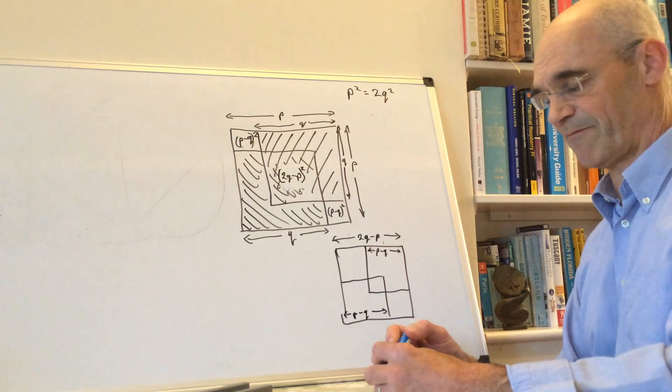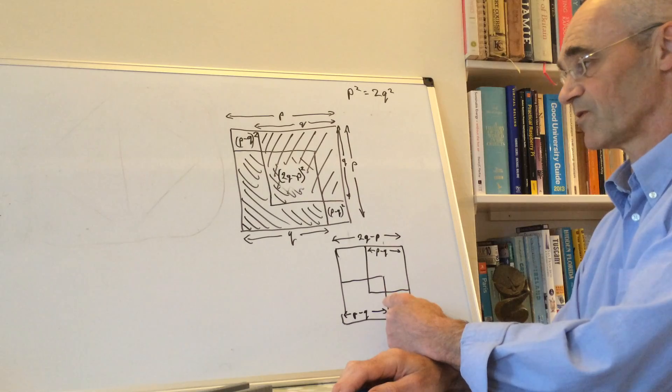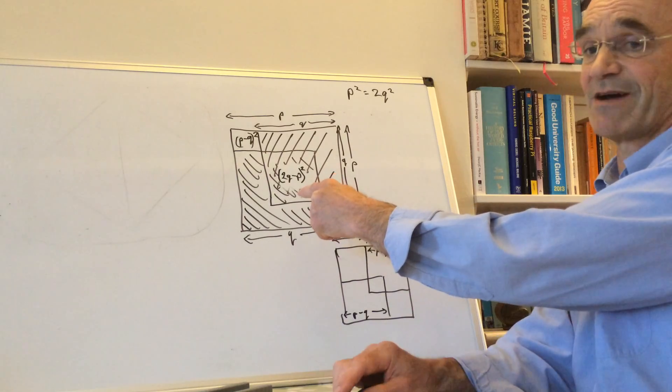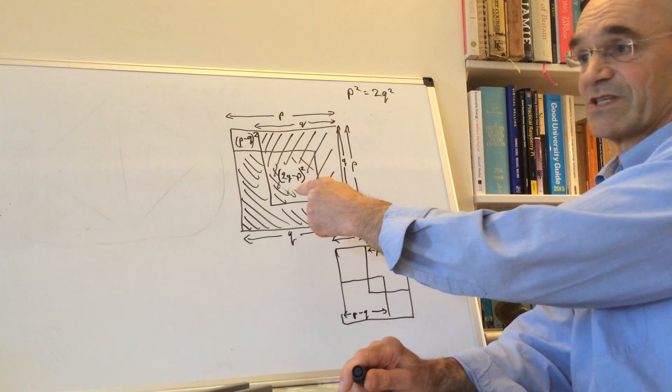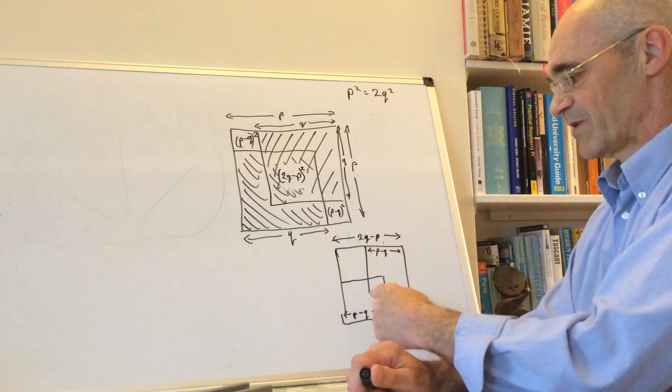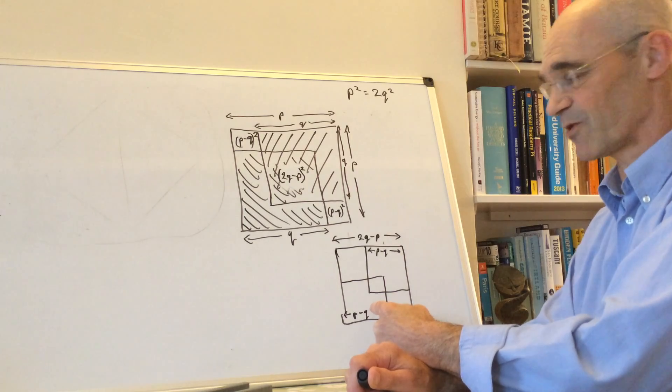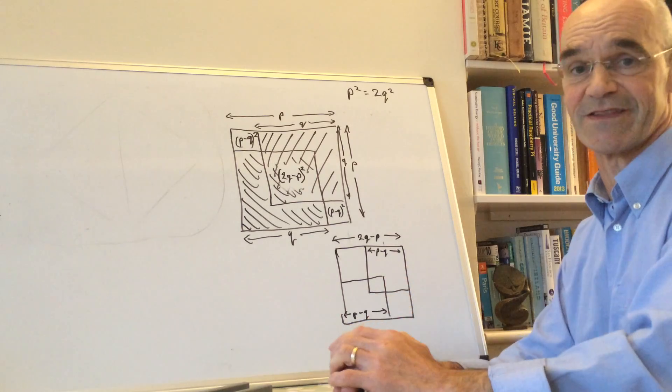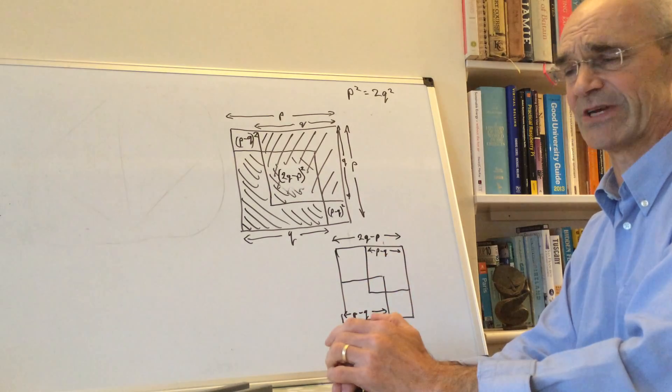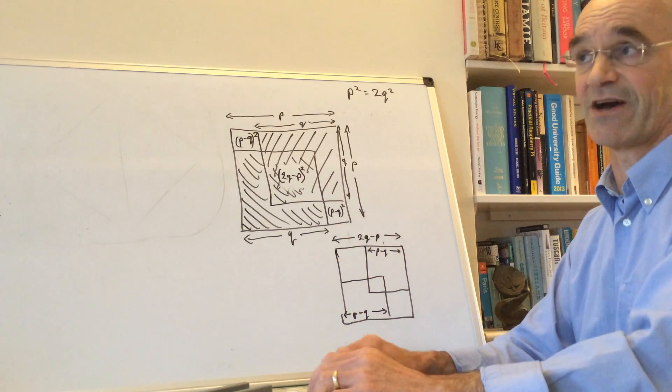So basically we've reduced the problem to a smaller one. Having started with some pair of squares, one of which is twice the size of the other, we've produced a pair of smaller squares, one of which is twice the size of the other. And we can just repeat the same process over and over again until we get down to squares of size 1, and then we'd still have to be able to keep going.